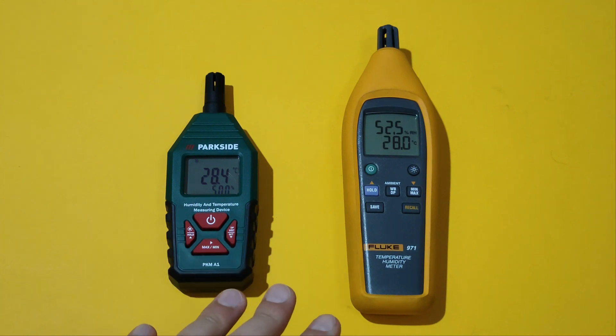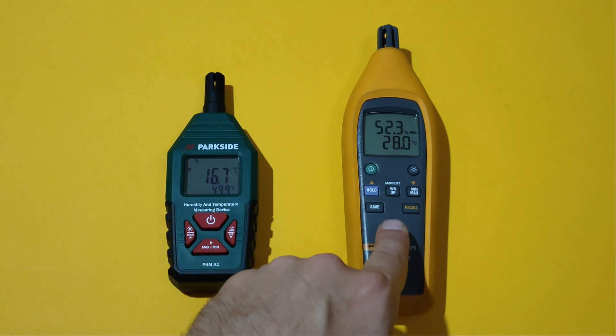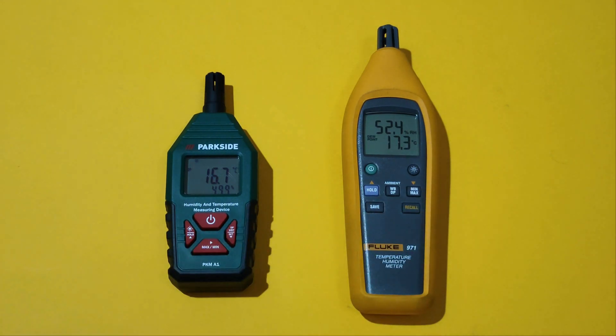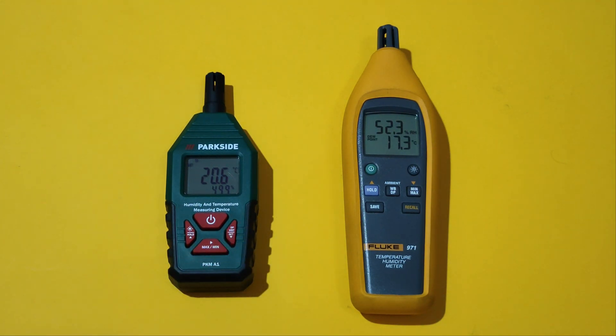As you can see, the air temperature readings are pretty equal. Let's toggle between the different temperature modes. Dew point temperature. Wet bulb temperature.